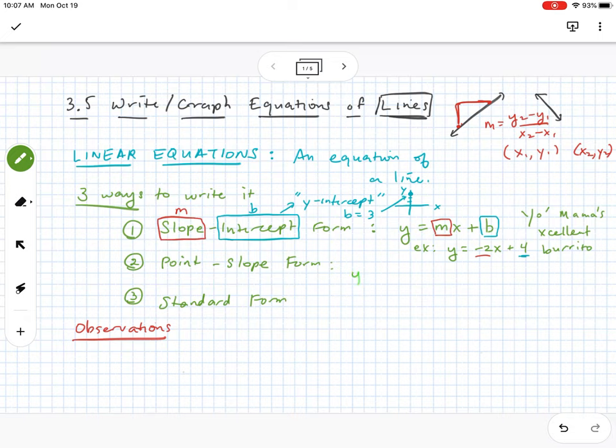The second type is called point-slope form. Point-slope form looks a little bit more complicated. It's y minus y1 equals m times x minus x1. The reason why this is called point-slope form is because we have a point x1, y1, and then we have a slope, which is given by the letter m.